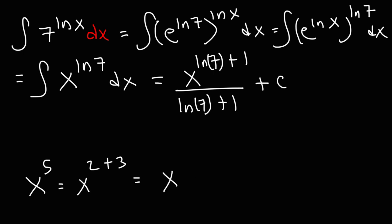And x raised to the 2 plus 3 can be written as x squared times x cubed. So you can write this as the product of two expressions, as long as the exponents add up to their original sum.